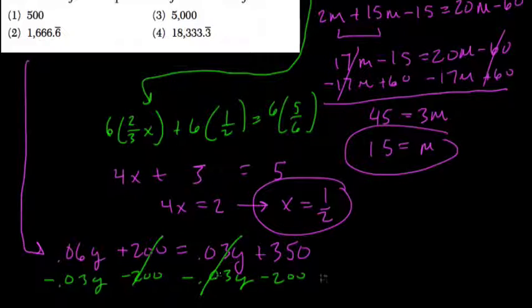This cancels out, cancels out. 350 minus 200 is just 150 equals...